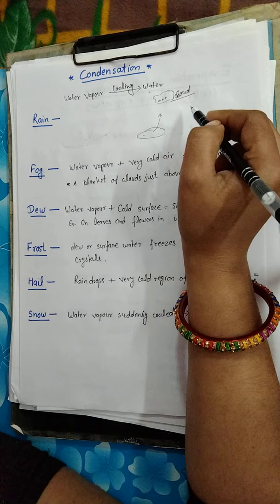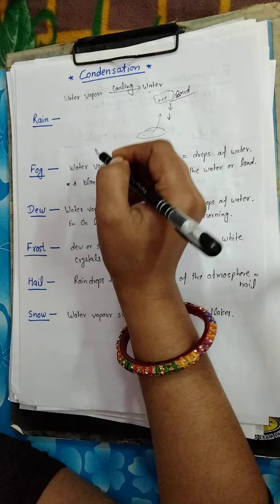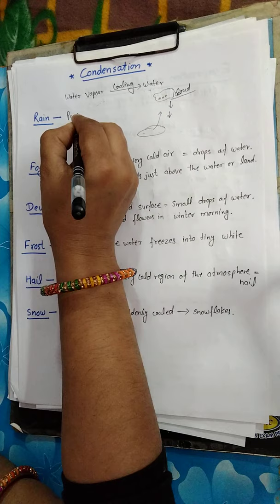The water vapor forms water droplets and creates a cloud. When this cloud becomes heavy, it falls down as rain. One important fact for competitive exams: rain water is the purest form of water.